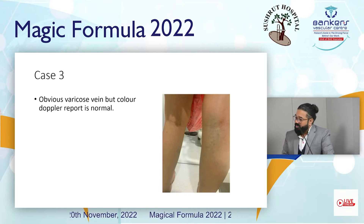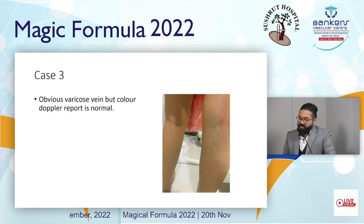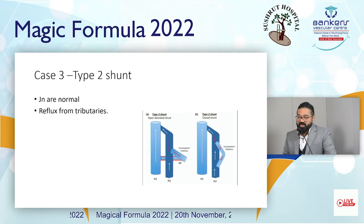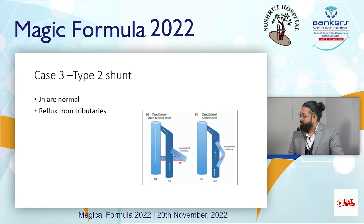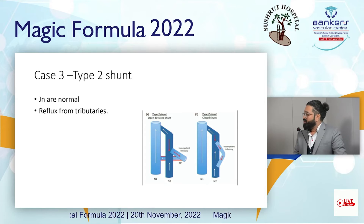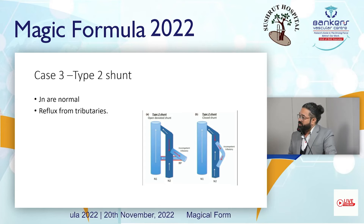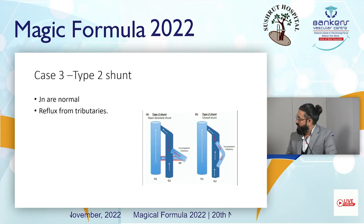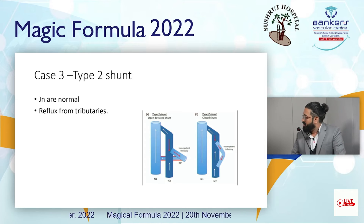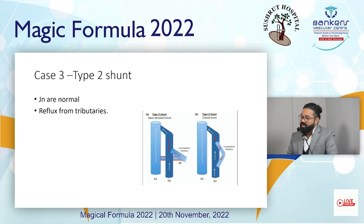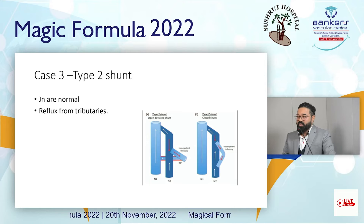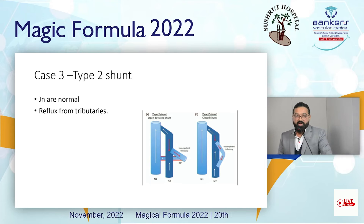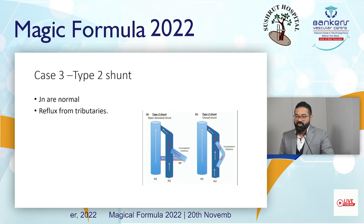In Case 3, you can see varicose veins but the report is normal. Why? Sometimes junctions are absolutely normal but there is reflux from tributaries — this is called a Type 2 shunt. There are two types: open deviator shunt and closed shunt. In the open deviator shunt, N1 is the deep vein, N2 is the superficial great saphenous vein, and the third component is incompetent tributaries which arise from the superficial vein and drain into the deep vein. In the closed shunt, tributaries arise from the superficial vein and drain back into the superficial vein only.